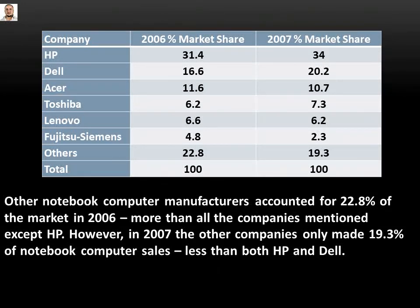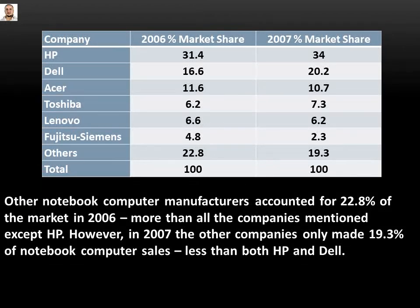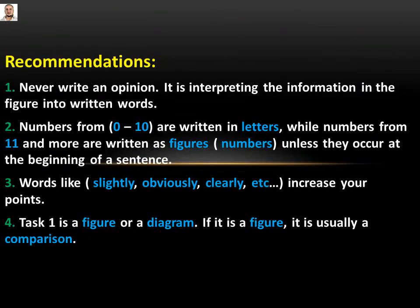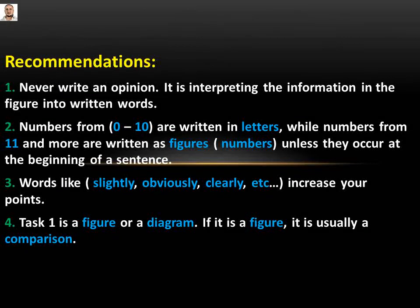The most important thing to remember is that in Task 1 of the Academic IELTS we don't have an introduction where you say 'in my opinion' or give reasons. Secondly, we summarize the information — we don't write a conclusion. And we never write our opinion or anyone else's. We just analyze and interpret the information of the figure into words.